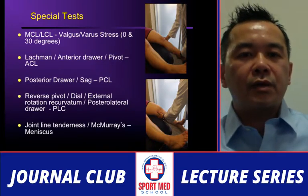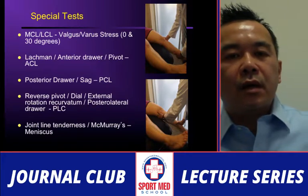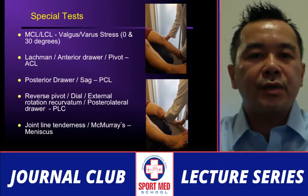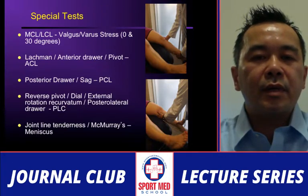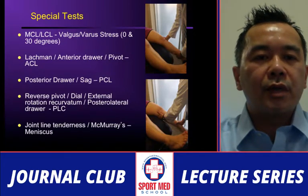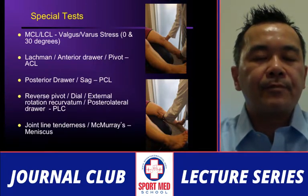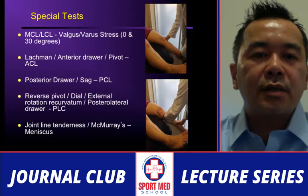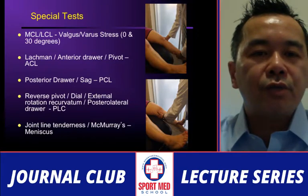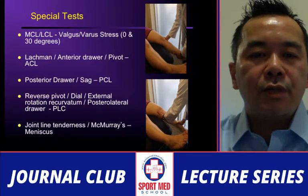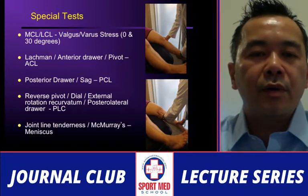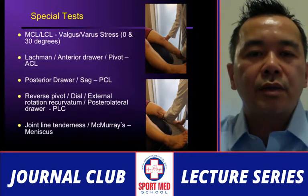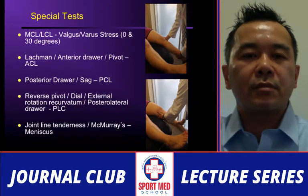After the collateral ligaments, focus on the cruciates. For the ACL, use the Lachman test, anterior drawer, and pivot shift test. The posterior drawer test is more so for the PCL, where you're looking for a sag. For harder special testing: reverse pivot shift test, dial test in prone or supine position, and external rotation recurvatum test for posterolateral corner injury. Joint line tenderness and McMurray's test associated with effusion is consistent with meniscal tear injuries.